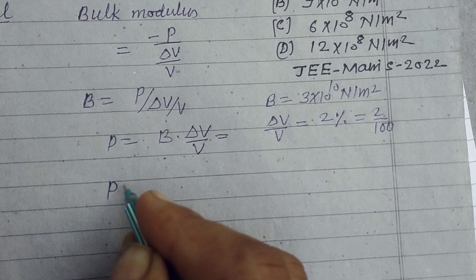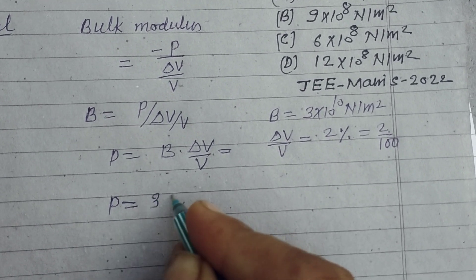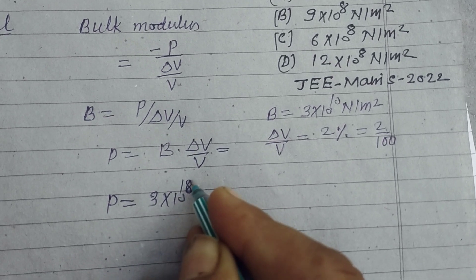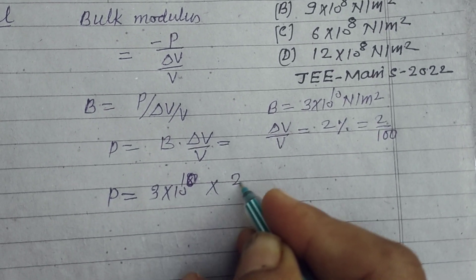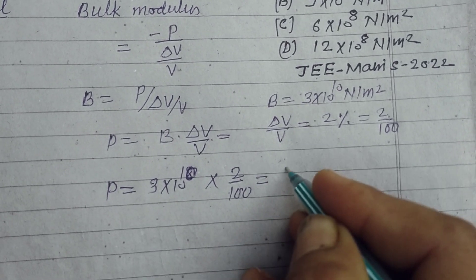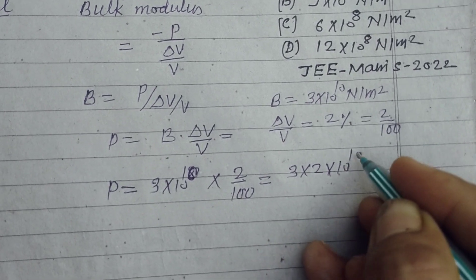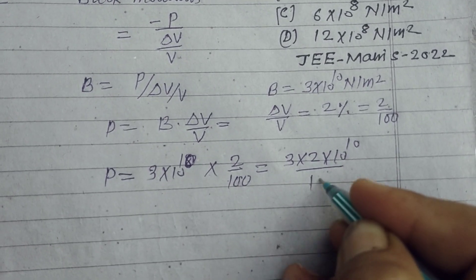So putting values, we can easily find the pressure. This is 3×10¹⁰ times 2/100, which becomes 3×2×10¹⁰, and 100 becomes 10².